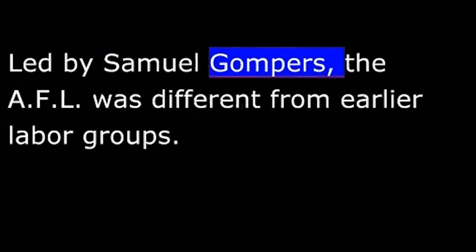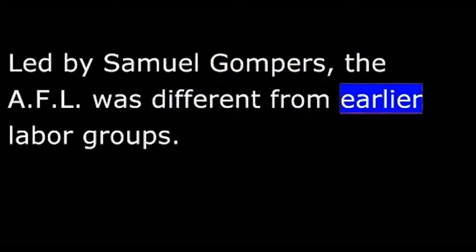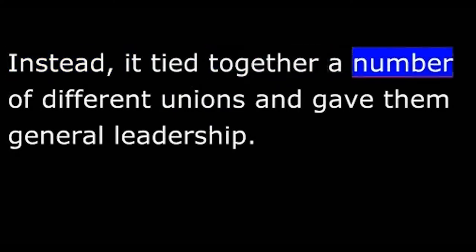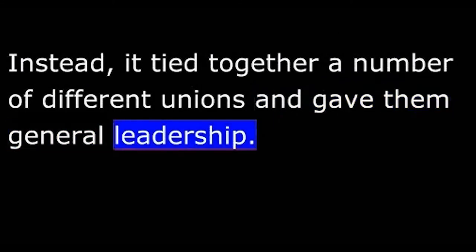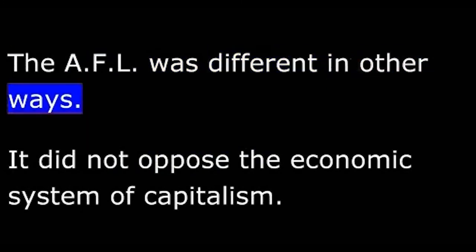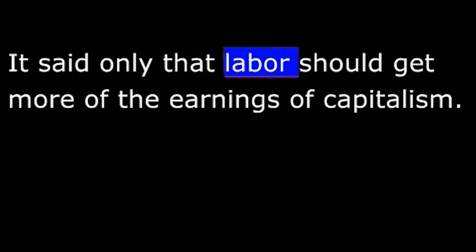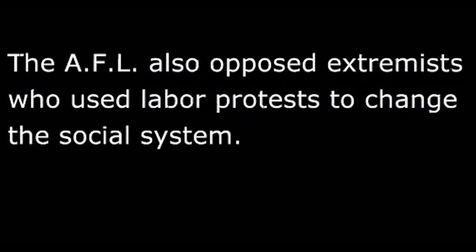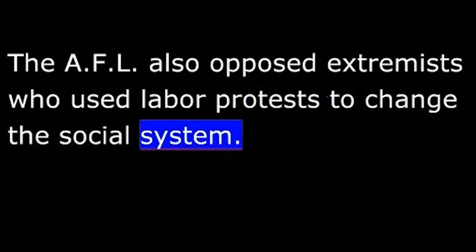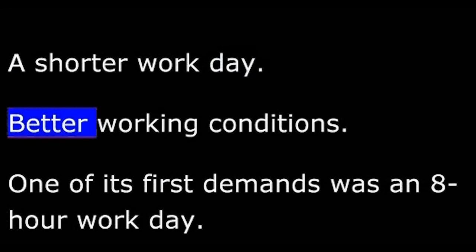Led by Samuel Gompers, the AFL was different from earlier labor groups. It did not try to put all workers into one union; instead, it tied together a number of different unions and gave them general leadership. The AFL did not oppose the economic system of capitalism — it said only that labor should get more of the earnings of capitalism, and it opposed extremists who used labor protests to change the social system. What the AFL called for were things workers wanted immediately: higher wages, a shorter workday, and better working conditions. One of its first demands was an eight-hour workday.